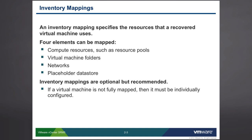That information is stored in a configuration file for the virtual machine when it fails over, and those need to be stored in what we call a placeholder data store. If the virtual machine has one of these elements which is not completely mapped, then when you go to protect the virtual machine — when you go to list that VM for protection — you're going to be required to go in and solve that problem.